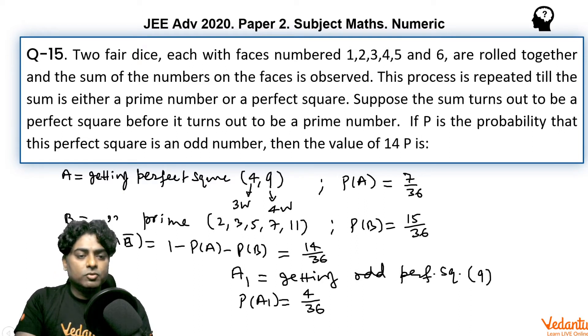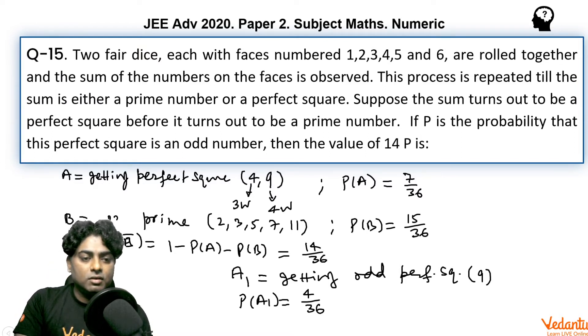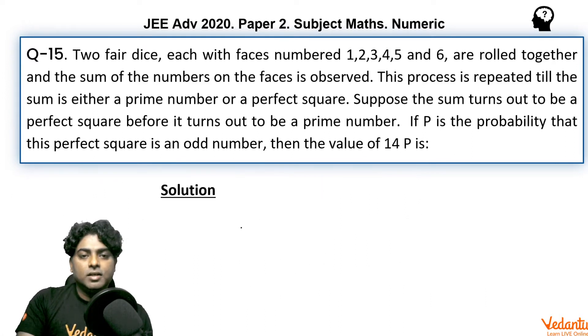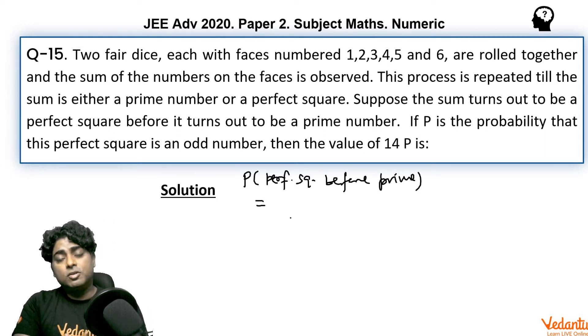Now, moving to the next page, two things are important here. See, we should get first the probability of getting perfect square before prime and probability of getting odd perfect square before prime. And the answer would definitely be the ratio of those two probabilities, obviously, isn't it? So, probability of perfect square before prime.